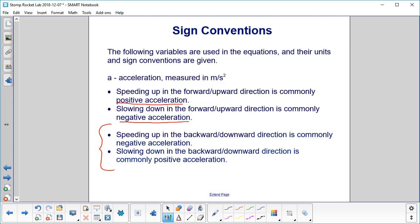That kind of makes sense, but let's look at these two. If you speed up in the backward or downward direction, that's negative acceleration. So you're speeding up, but you have a negative acceleration. This is why we don't use the word decelerate in physics. So let's give an example of that.